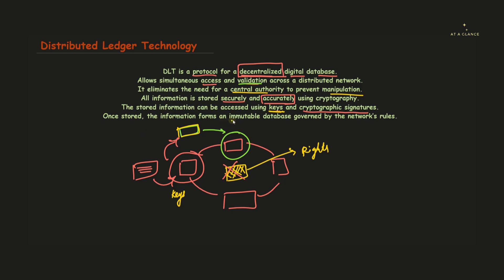Once stored, the information forms an immutable database governed by network rules. As there is no central authority, information stored in the network becomes immutable — it cannot be altered or tampered with at all. Any third party cannot access, alter, or tamper with data stored for a particular node, making the entire system more secure and robust.